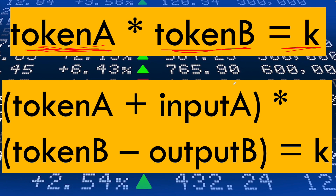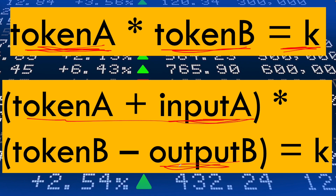So what happens when you're swapping token A for token B? You're going to give some of your token A into the exchange. Therefore, the total supply of token A in the exchange is going to increase by the amount you're giving it — let's call that input A. Because you're giving your token A to the DEX, the DEX is going to give you token B in return. Therefore, the total supply of token B is going to decrease by output B — the number of token B tokens you're being given. After the swap, the new total supplies must still multiply to the same constant K.